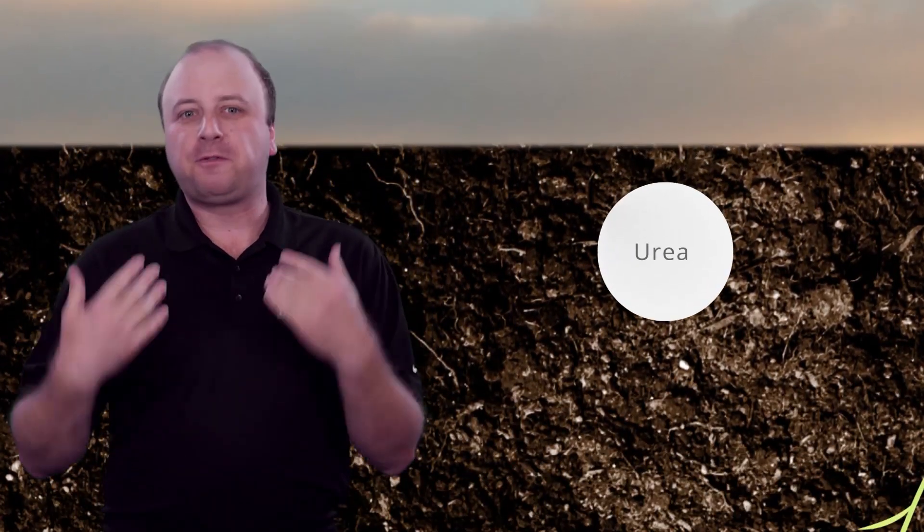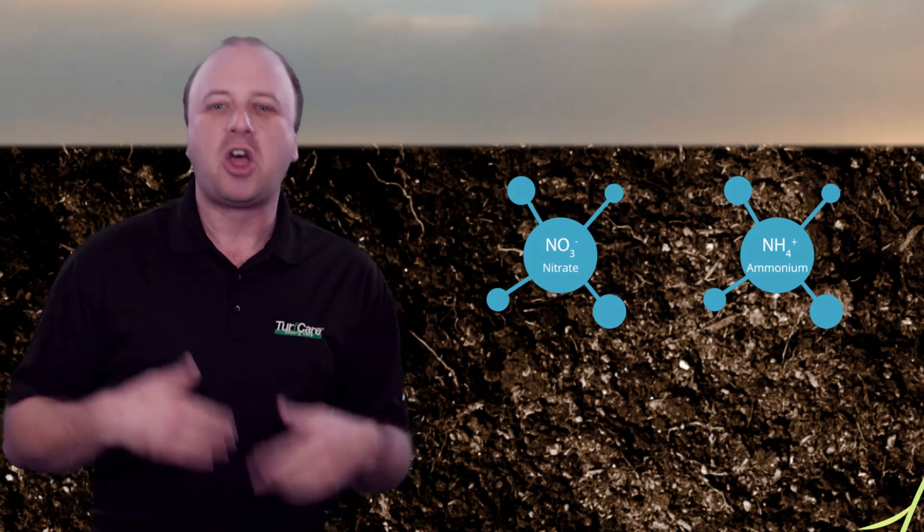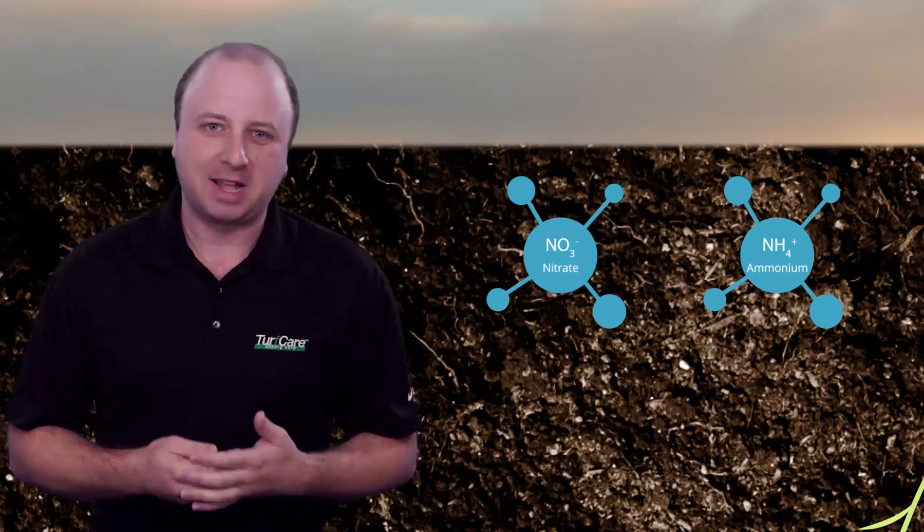Now here's an interesting fact. Even though most of the nitrogen in a bag of fertilizer comes from urea, plants can't actually use nitrogen in urea form. In fact, plants rely on soil bacteria to digest and convert urea into ammonium and nitrate, which again are the only two forms of nitrogen that plants can use.